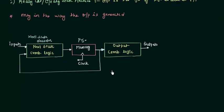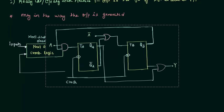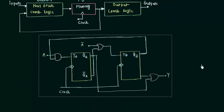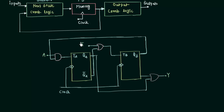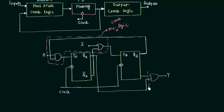Now I will show you one example in which we will try to find out whether it is a Moore circuit or a Mealy circuit. This example uses T flip-flops and some gates. Let's try to find out what is the next state combinational logic in this sequential circuit and what is the output combinational logic. The input is A, which is given to two logic gates — this is our next state combinational logic — and this OR gate is our output combinational logic.